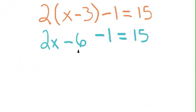I see my minus 6 and minus 1 are both normal numbers, so they can simplify also. 2x minus 7 is equal to 15. There's nothing we can simplify on the right-hand side of the equation that's already as simple as it gets. And the left-hand side is now fully simplified.